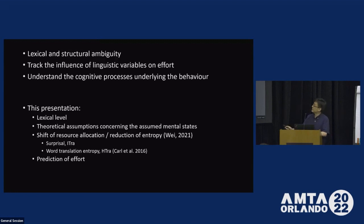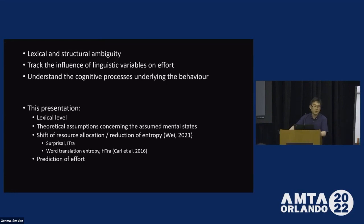This is briefly touched upon in a paper last year. I will try to argue that the shift of resource allocation is equivalent to surprisal and can be approximated through empirical data by what we call ITRA in the CREAT database. And the other one, which is reduction of entropy, can perhaps be approximated by ASTRA in the dataset. These are conceptual, and in the empirical part I will compare these two metrics in terms of their prediction of effort. So that's the structure of the presentation.